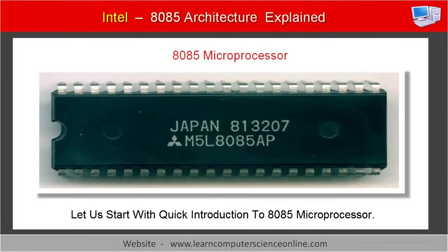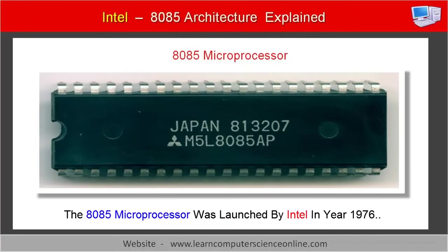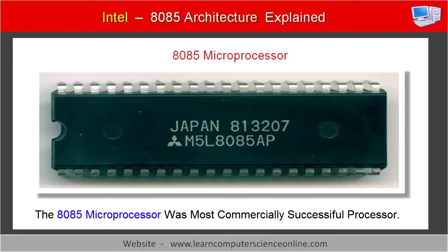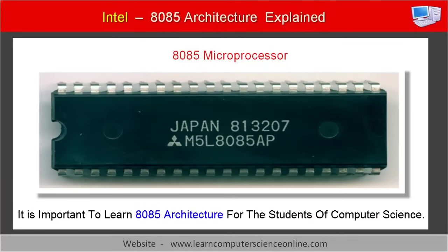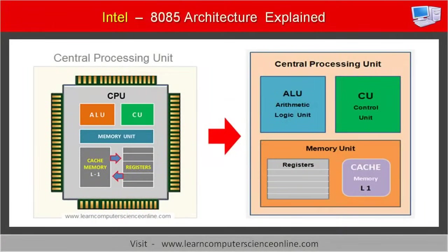Let us start with a quick introduction to the 8085 microprocessor. The 8085 microprocessor was one of the first 8-bit processors launched by Intel Corporation in 1976. This was also one of the most commercially successful processors, still being used in many devices. After the success of the 8085, Intel also launched processors with 16-bit, 32-bit, and 64-bit architecture. However, it is important for computer science students to first study the 8085 architecture in detail. This will help you understand foundational concepts necessary to study microprocessor architecture and how the CPU works.